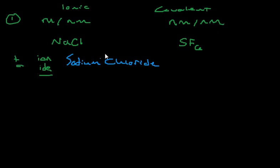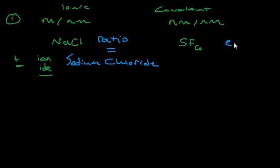One thing to mention: the difference between ionic and covalent compounds is that an ionic compound gives you a ratio — it's telling you the ratio between the sodium and chlorine atoms. In this case the ratio is equal. A covalent compound tells you the exact amount of atoms — so SF6 tells you that for every sulfur atom, there are six fluorine atoms. That's the difference between the two, and that's why the naming is different.